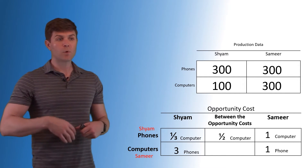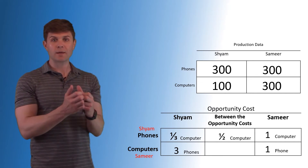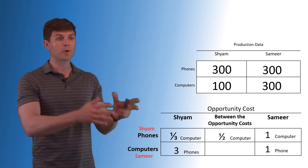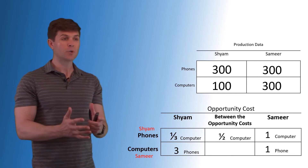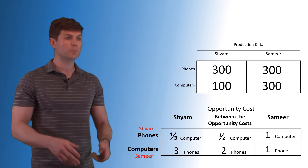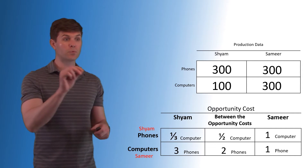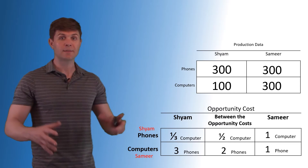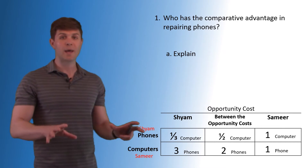Sham has an opportunity cost of one-third of a computer; Samir's is one computer for the repair of a phone. One value that falls between those opportunity costs is half a computer — it can be anything greater than one-third and less than one computer. With computers, one computer for three phones versus one computer for one phone — what falls in between? Two phones. So acceptable terms of trade are: one phone for one-half a computer, or one computer for two phones. Either of these work — just fall between those terms of trade. Let's answer the questions now that we have the data. Sham has the comparative advantage in phones, and Samir has the comparative advantage in repairing computers.